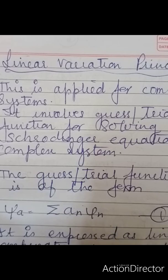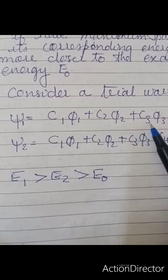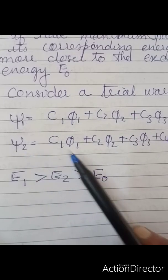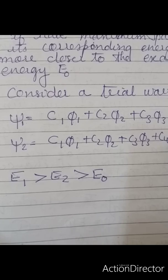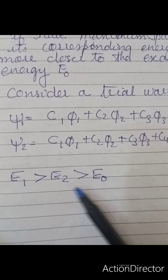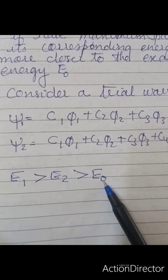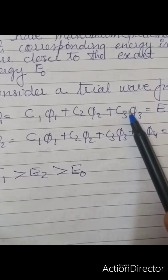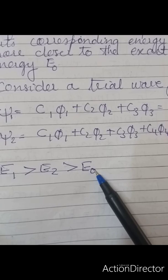Consider two trial wave functions: psi_1 equals C1*phi_1 + C2*phi_2 + C3*phi_3 with energy E1, and psi_2 equals C1*phi_1 + C2*phi_2 + C3*phi_3 + C4*phi_4 with energy E2. Since psi_2 has more parameters than psi_1, E2 will be closer to the exact ground state energy E0. This is the linear variation principle.